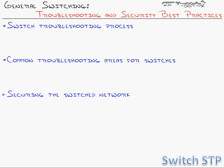That wraps up the troubleshooting and security practices for our switch network — and that wraps up switches for this entire video series. We're not going to talk about switches anymore; it's going to be all router concepts from here on out. We saw the switch general troubleshooting process using the OSI model as a guide, familiarity with your network, and a logical network diagram. We saw common troubleshooting areas like port issues and spanning tree issues. And we saw best practices Cisco recommends to secure the switch network — locking down the inside of your network rather than leaving it wide open.